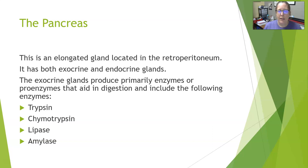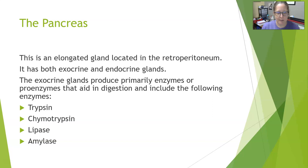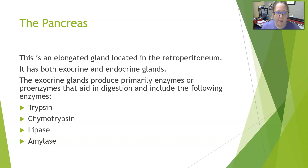These enzymes include, but are not limited to, trypsin, chymotrypsin, lipase, and amylase. Those are the primary ones that the pancreas produces as part of its exocrine function.